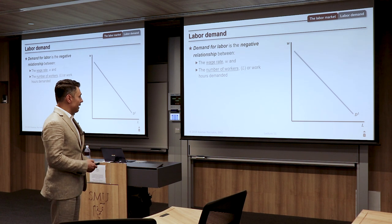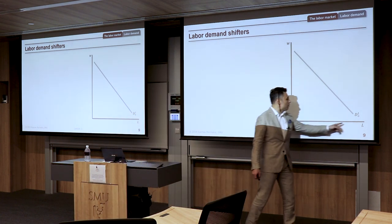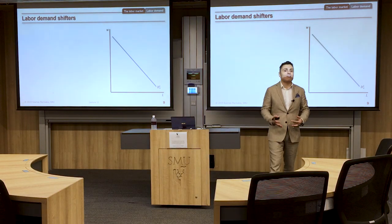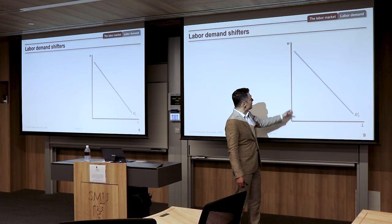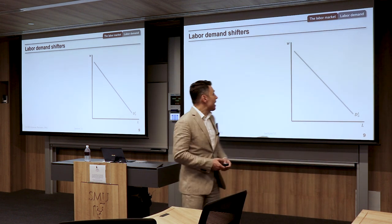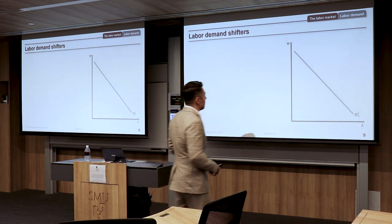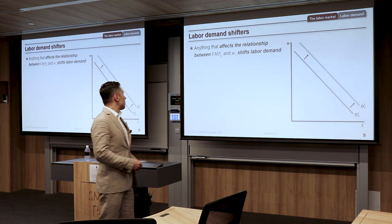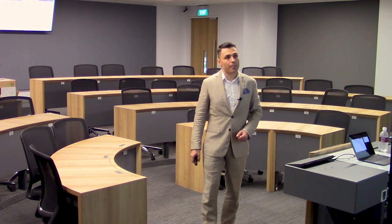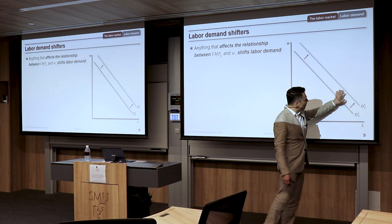The third shifter is technology. Technology increases worker productivity — for example, having a computer or a projector makes you more effective. But the result for labor demand is ambiguous: in some production processes firms want to hire more workers, in others they want fewer.